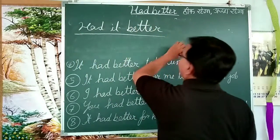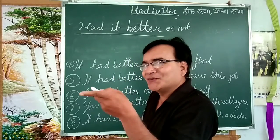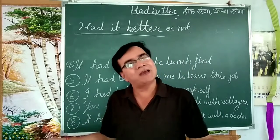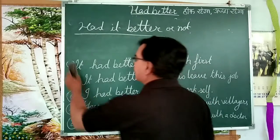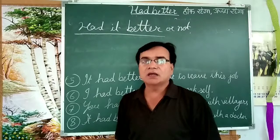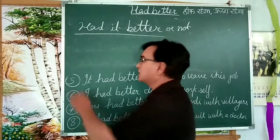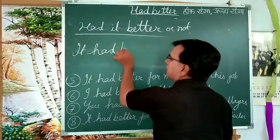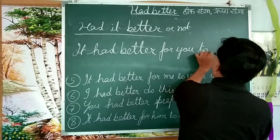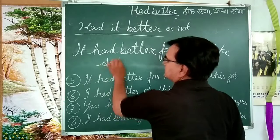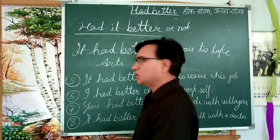We can say: 'It had better for you to leave bachelor because you can't earn money, you can't handle family.' Also, 'It had better for Rahul to take arts' — Rahul के लिए अच्छा होगा — because he has not got good percentage. You can say 'it had better for you to take arts' — right.